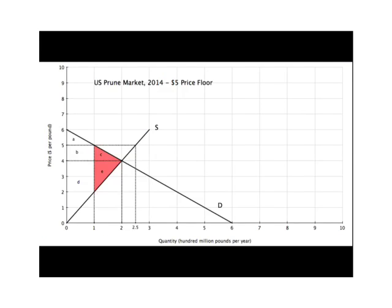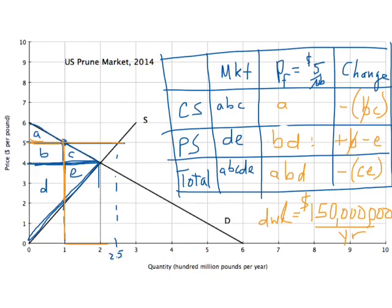It's a prettier graph, but I saved the tabulation for this exercise. One thing I did in the word-processed example that I didn't do here was highlight the deadweight loss area. Notice another way to think about deadweight loss: the market outcome occurred at 200 million pounds of prunes per year; the price floor limited output to 100 million. Every one of those 100 million pounds of prunes that didn't get produced was valued higher than the cost to produce it — so we lose the chance to achieve that value. That's the welfare loss of this policy.